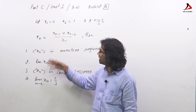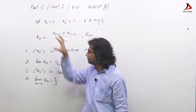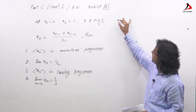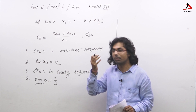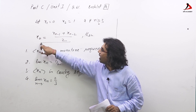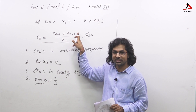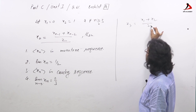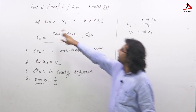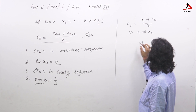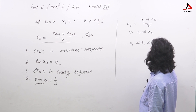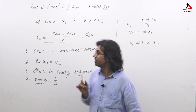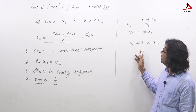The options ask about the nature of this sequence — whether it is monotonic or not, Cauchy or not, or convergent or not. The first thought which comes to mind is that each term is the arithmetic mean of the previous two terms, that is x₃ = (x₁ + x₂)/2. Since x₁ is not equal to x₂, x₃ lies strictly between x₁ and x₂, hence the sequence is not monotonic — that option is discarded.